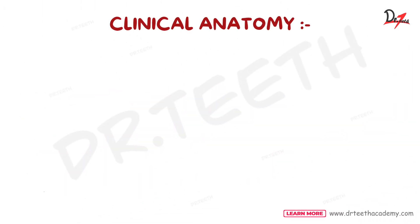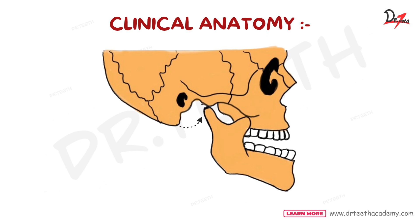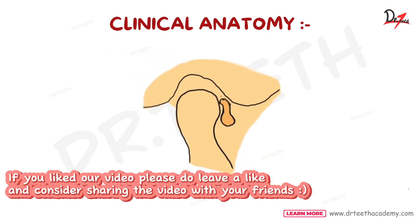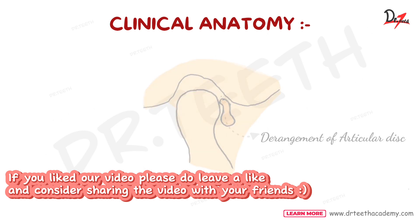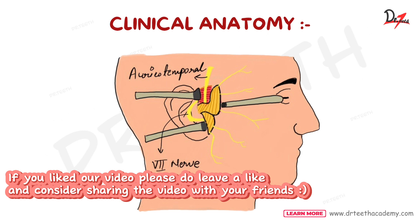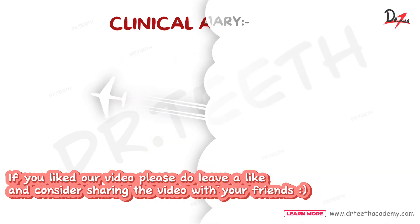Now let's discuss clinical anatomy. Dislocation of the mandible is seen during excessive opening of the mouth. Any injury like over-closure or malocclusion can cause derangement of the articular disc. During any operations in the TMJ, the seventh nerve and auriculotemporal nerve should be preserved with care.